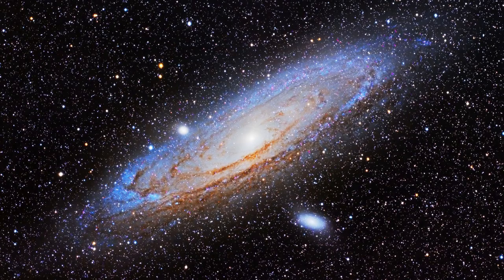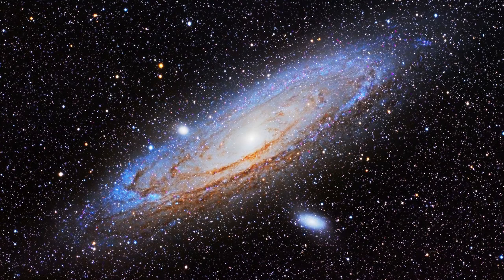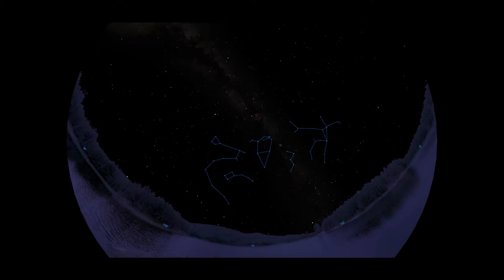Binoculars would make it plain to see in even somewhat light-polluted skies. That's the Andromeda galaxy, our nearest neighboring spiral galaxy at 2.5 million light-years from us, which makes it the furthest object that can be seen with the naked eye. It's on a collision course with our own Milky Way galaxy, but worry not. The collision won't happen for another 5 billion years, give or take a few hundred million.